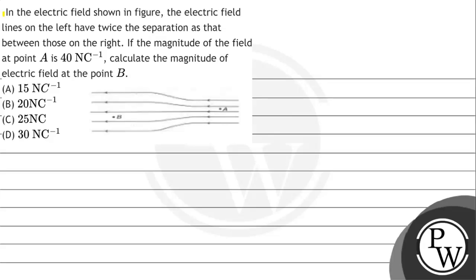Let's read the given question. The question says: in the electric field shown in the figure, the electric field lines on the left have twice the separation as those on the right. If the magnitude of the field at point A is 40 newton per coulomb, we need to calculate the magnitude of the electric field at point B. Option A: 15 N/C, Option B: 20 N/C, Option C: 25 N/C, Option D: 30 N/C.